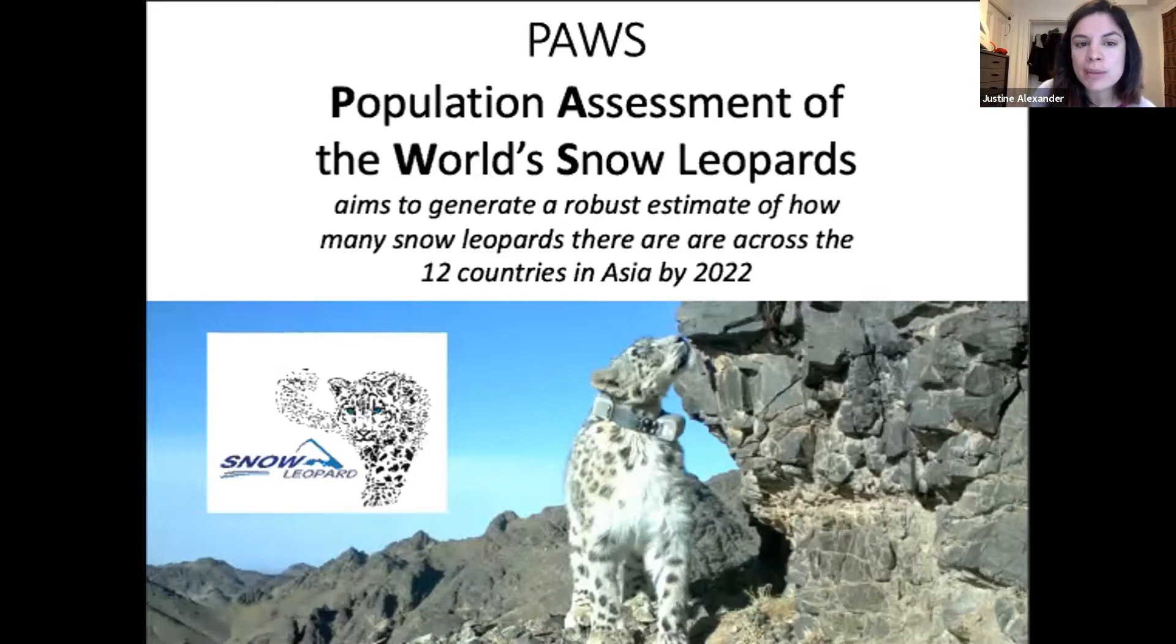PAWS, or Population Assessment of the World Snow Leopards, has a main objective to generate a truly robust estimate of how many snow leopards there are across the 12 countries in Asia, which is an area around one to two million square kilometers.